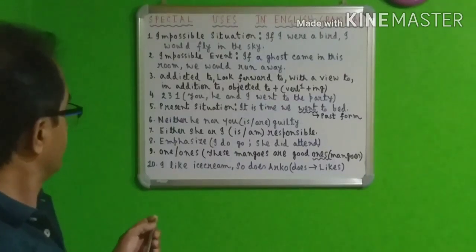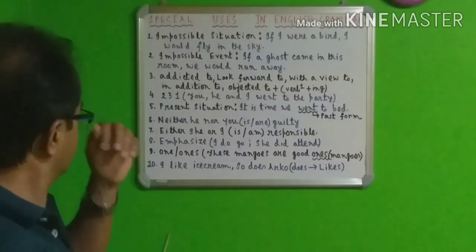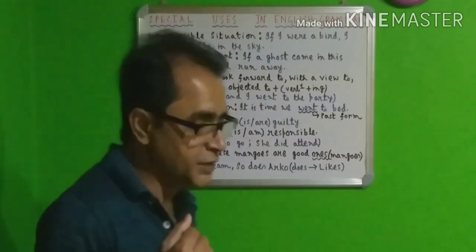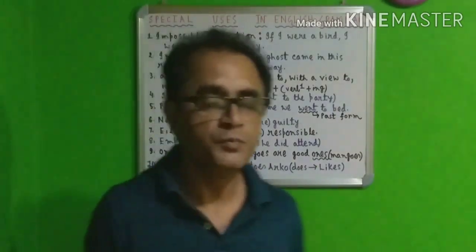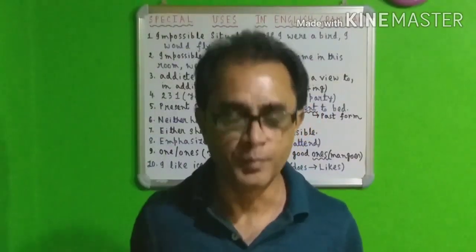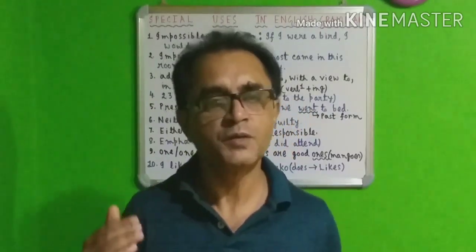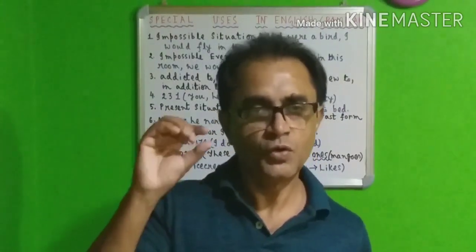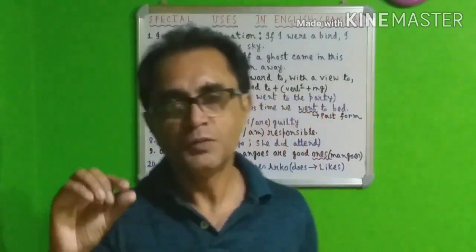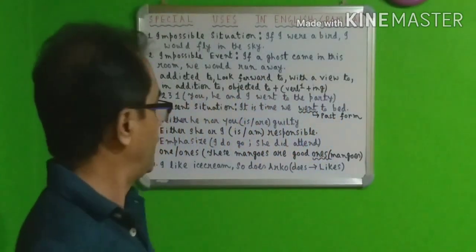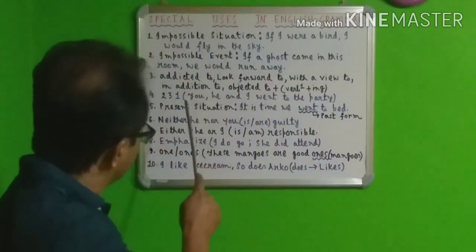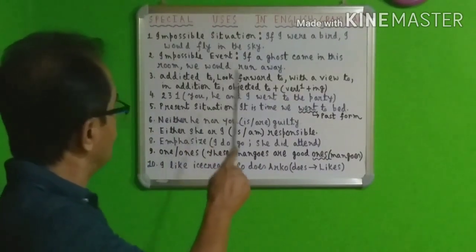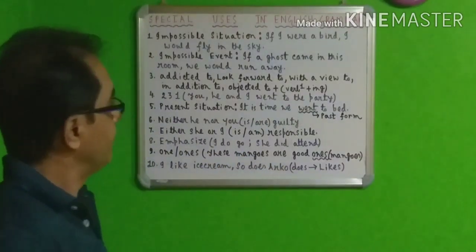Now coming to the third category. Before that, I want to tell you one thing: what form of verb comes after 'to'? Every time, we go to school 'to study' — after 'to' we use the present form of the verb. But here you will also find phrases like 'addicted to,' 'look forward to,' and 'with a view to,' where a different rule applies.